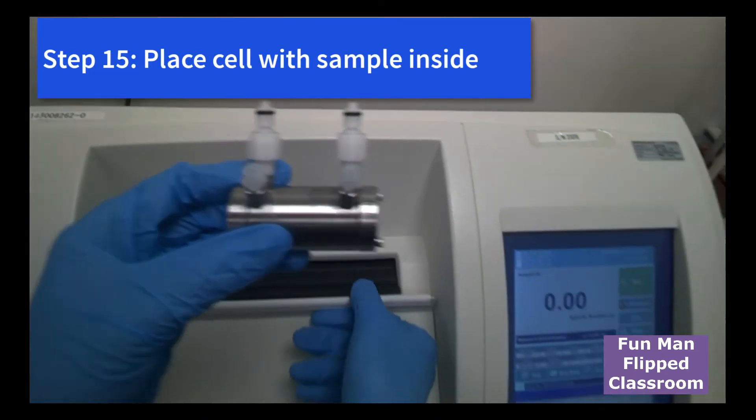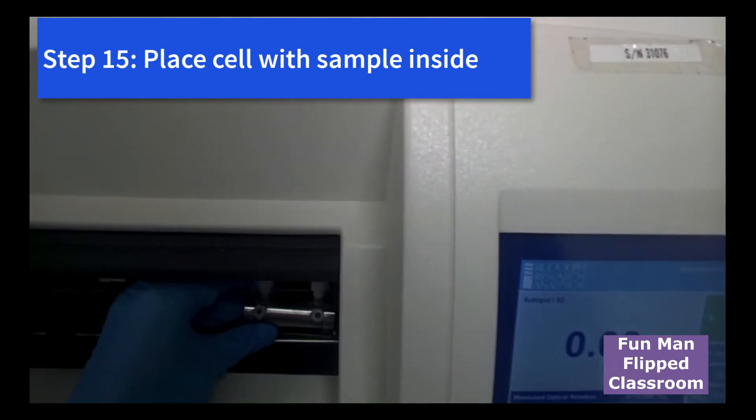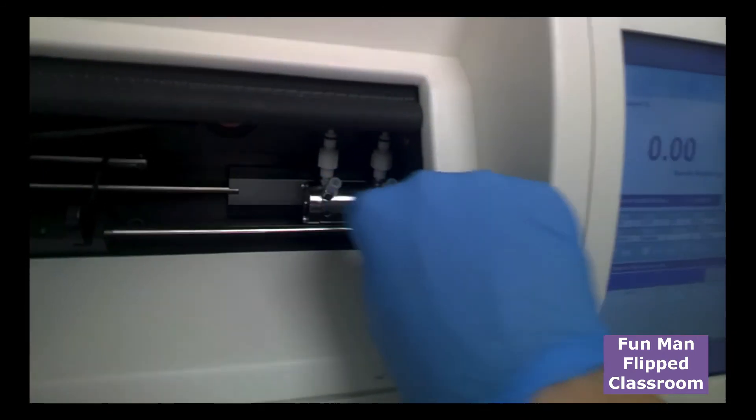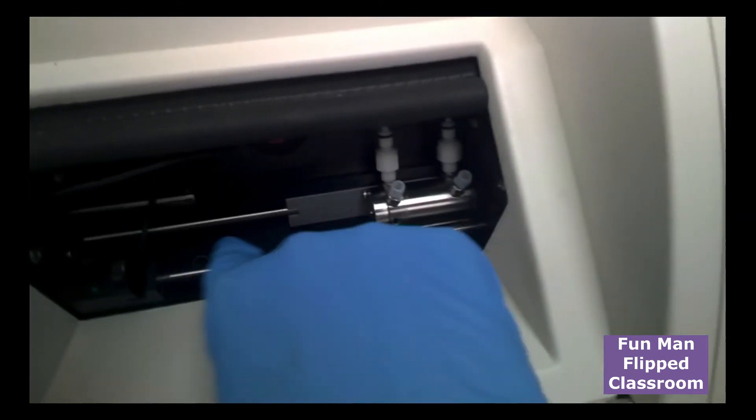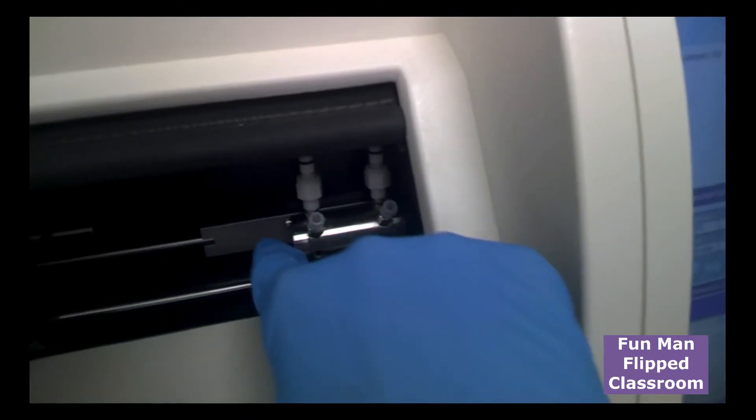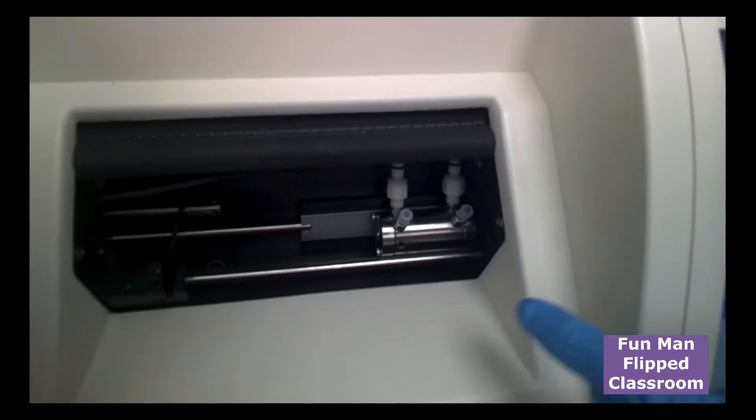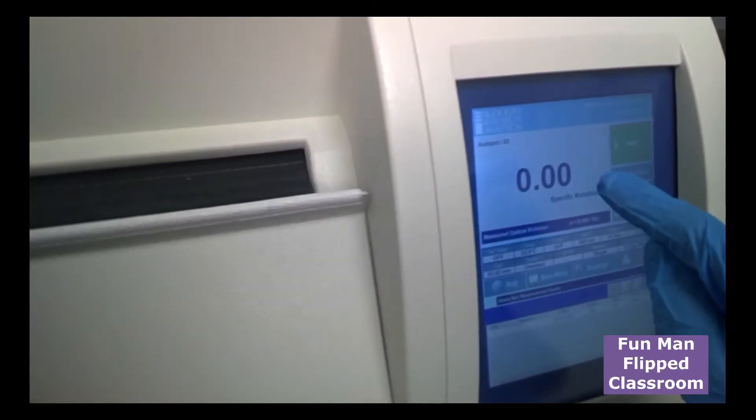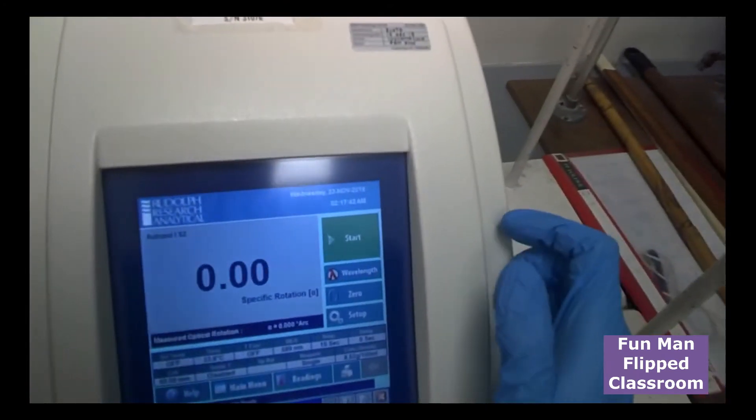So, I'll place the cell inside there. Push it to the right. Make sure it sits there. The ray should go through the path. If it doesn't sit properly, the ray might be blocked and you do not have a good measurement. Close the door tightly. And now, we press start.